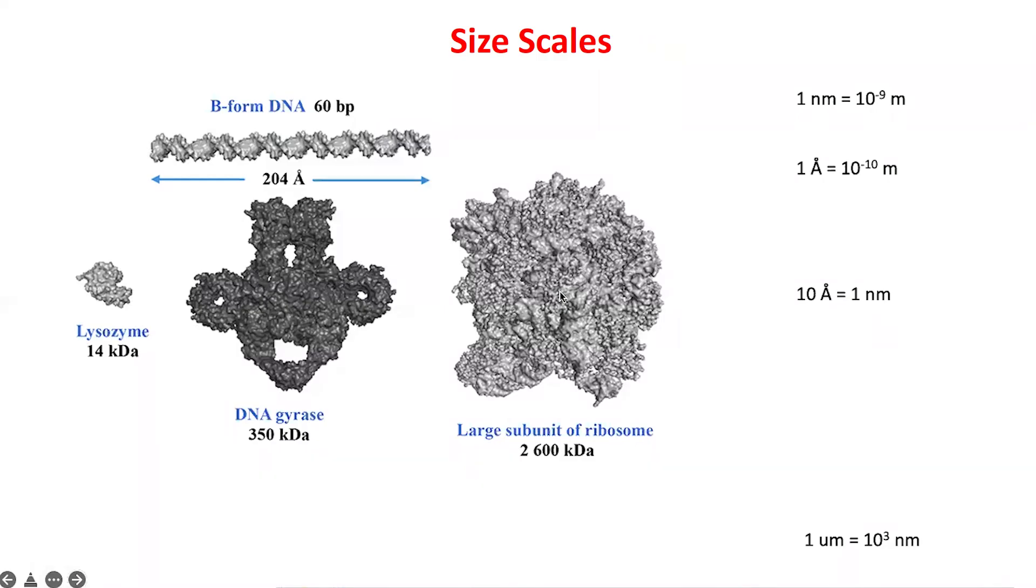Let me end by talking about size scales. I just want you to appreciate the volumes of these molecular entities. On the right hand side I have explained very basic things: a nanometer is 10^-9 meter, and a micrometer is 10^3 nanometers. The term angstrom is used in crystallography quite a lot. 10 angstroms is basically one nanometer. This is the B form of DNA, 60 base pairs, and it will be about 204 angstroms in length.